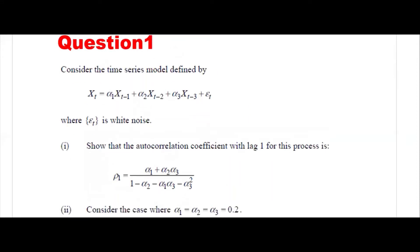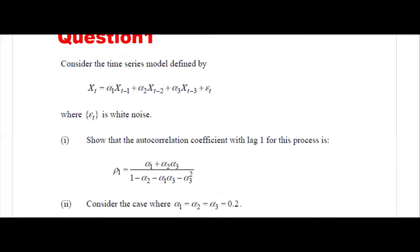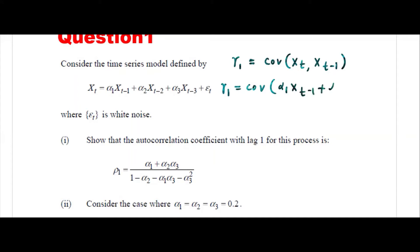Here if you see, this is a completely AR process. We will try to find rho 1 by computing gamma 1. Gamma 1 is the covariance of Xt and Xt minus 1. So if you write gamma 1 here, it is the covariance of Xt — normally written as alpha 1 Xt minus 1 plus alpha 2 Xt minus 2 plus alpha 3 Xt minus 3 plus Et — with Xt minus 1.